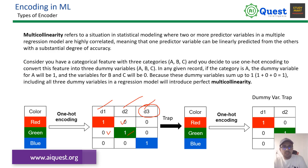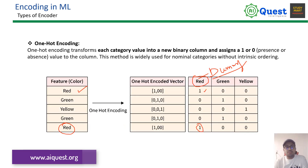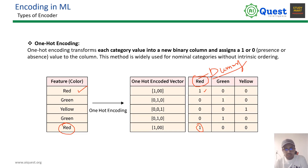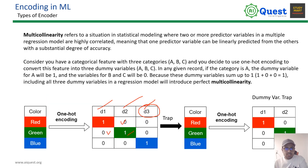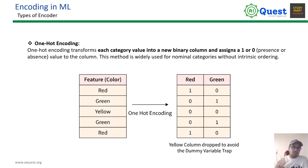This is another way to encode your data and it is efficient. We use zeros and ones throughout. It is not easy to interpret when you have many columns. For example, if you have red, green, and blue, the yellow column is not needed. This is actually the dummy variable trap.